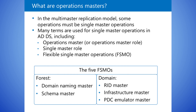The Infrastructure role should not reside on a global catalog server, unless you have a single domain forest. The exception is when you follow best practices and make every domain controller a global catalog. In that case, the Infrastructure role is not necessary, because every domain controller knows about every object in the forest.